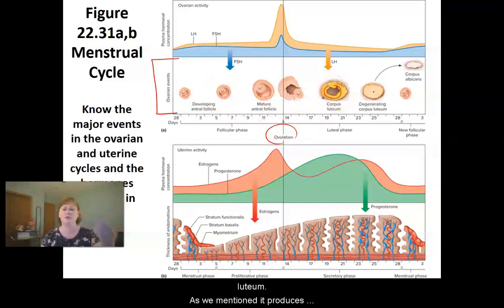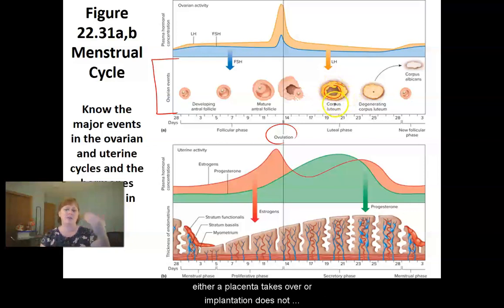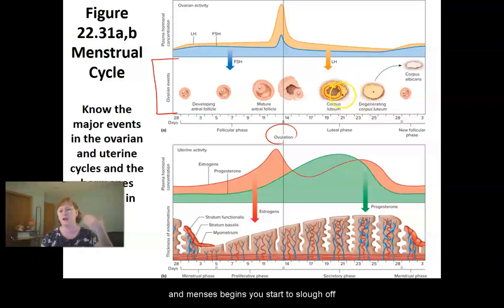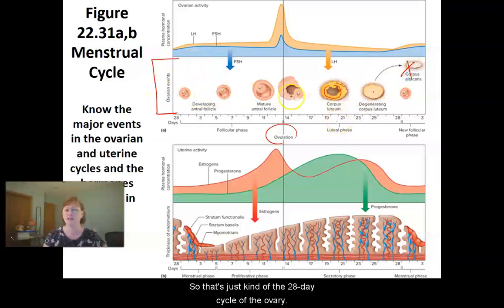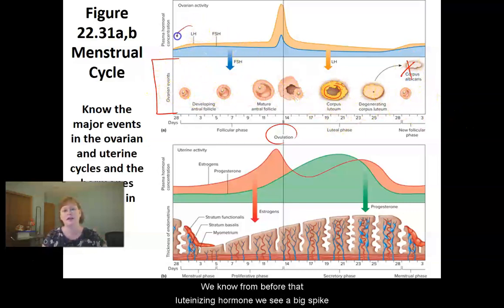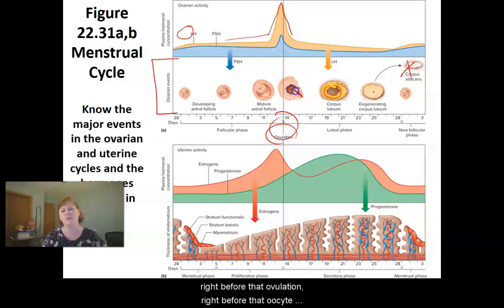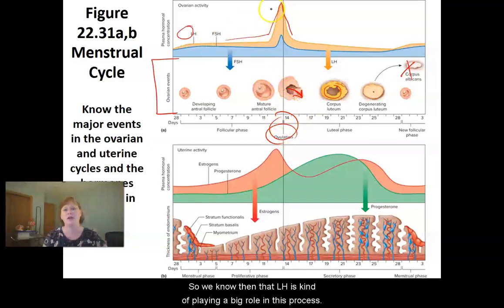The corpus luteum produces hormones to maintain the pregnancy until either a placenta takes over or implantation does not occur. If implantation does not occur and menses begins, you start to slough off the endometrial lining, then it basically just scars up. That's the 28-day cycle of the ovary. We know that luteinizing hormone shows a big spike right before ovulation, right before that follicle ruptures and releases the oocyte, so LH is playing a big role in this process.